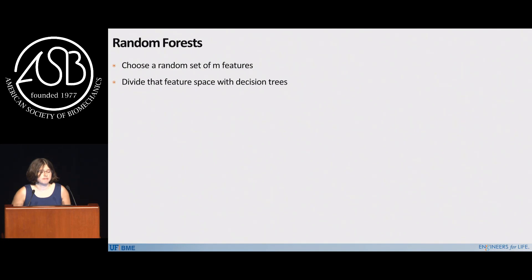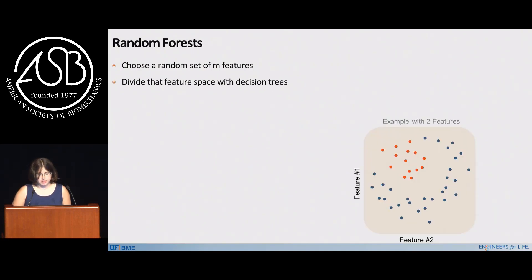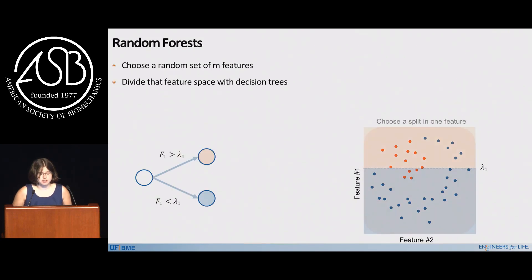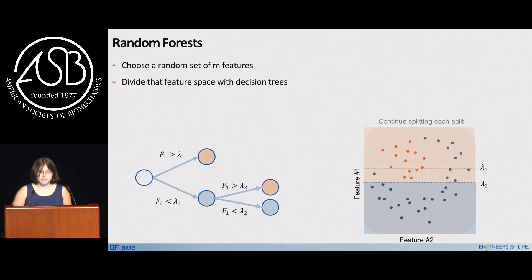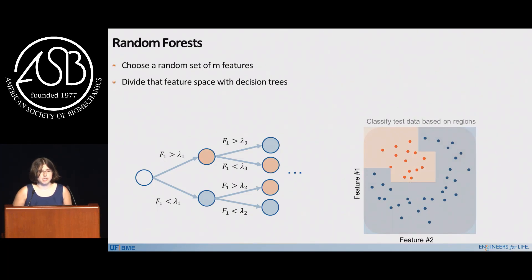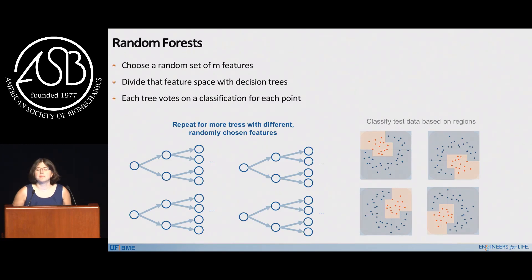The second method is called random forests. You choose a random set of features and divide them using something called a decision tree. With two features, trying to separate blue dots and orange dots, you draw a root node containing all your data. Then you draw a random line based on one feature and classify whether most of the points above it are orange or below it are blue. By continuing to draw lines and classifying which side has more blue or orange dots, you gradually build a tree to separate your categories. The power of random forests is building lots and lots of trees — with two features or nine features or as many as you want — and then it becomes a democracy: every tree votes on what color it thinks a dot is.